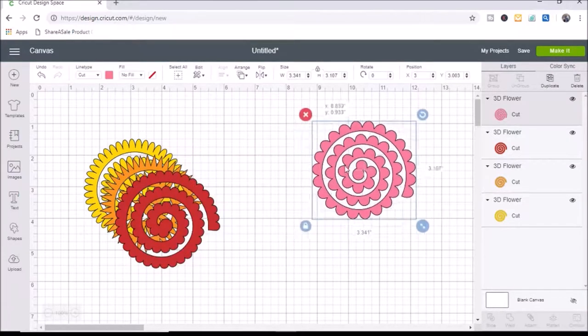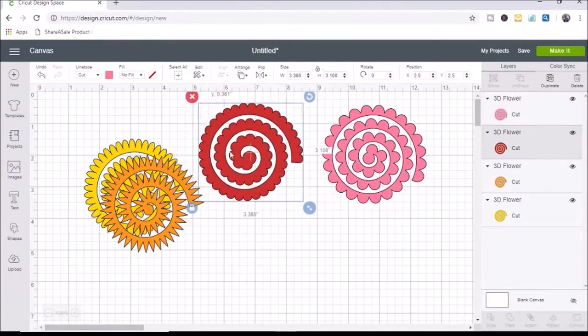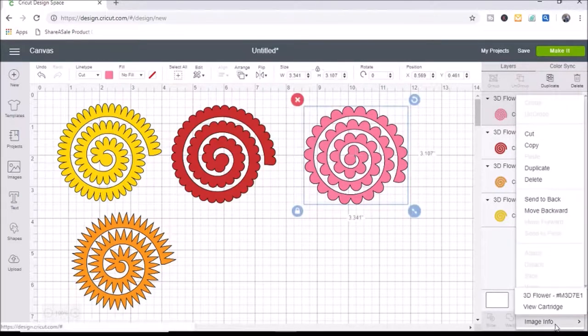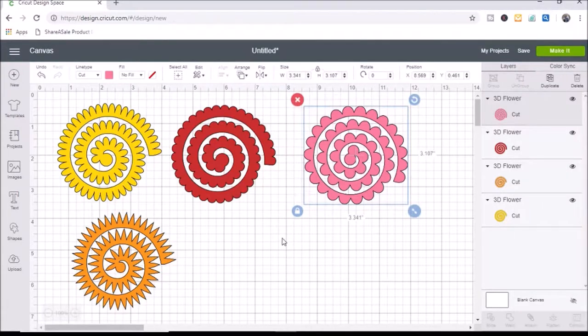Okay, we have all of our flower templates here. I'm just going to move these out so it's easier to look at. Another thing that I wanted to show you, if you couldn't remember which code went to which flower template, you can right-click on the layer panel, go down to image info and it shows you right there. So that's kind of nice just to see that there.